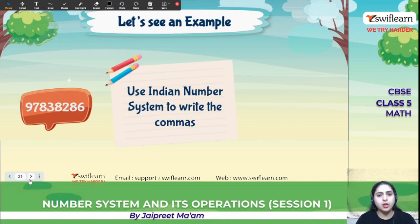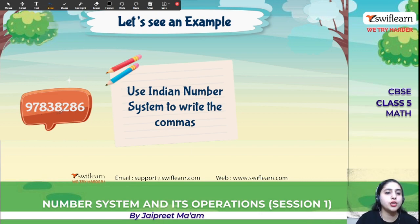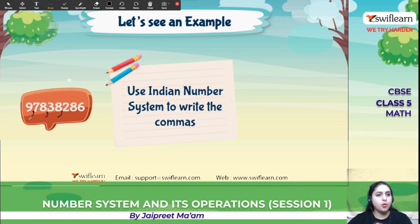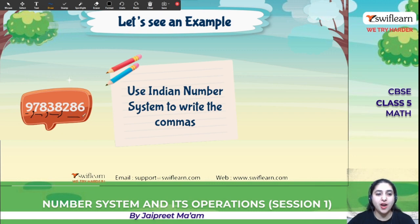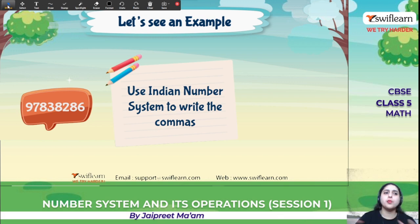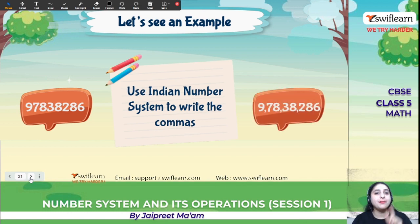For example, the number 97838286 — let's make it easy. First comma after the unit period, then after the thousands period, then after the lakh period. Now it reads 9,78,38,286. Easy with commas! For large numbers, if we don't use commas, we'll get confused. Using commas, we can read them correctly.